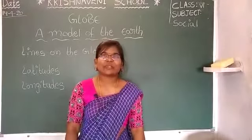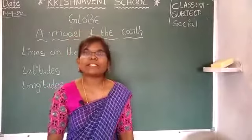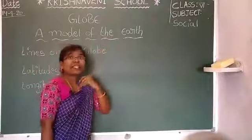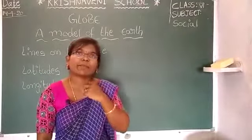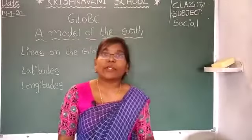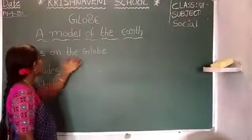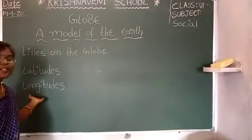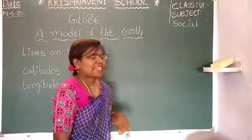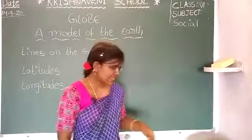Hi, how are you? So far we completed the second lesson — Globe, Model of the Earth. In that we covered: the earth is like a ball, the directions of the globe, and oceans and continents. Today in this class we will discuss two topics: lines of the globe, and latitude and longitude. What are the lines running on the globe? What do we call those lines? Let us see.